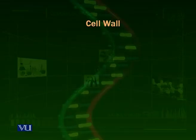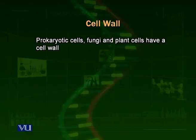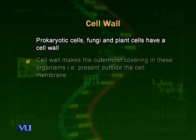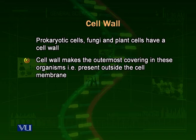Now we talk about the cell wall. All the plant cells, the algae, fungi and the prokaryotic cells do have a cell wall. Cell wall is a layer that consists of different types of material which is present outside the cell membrane.